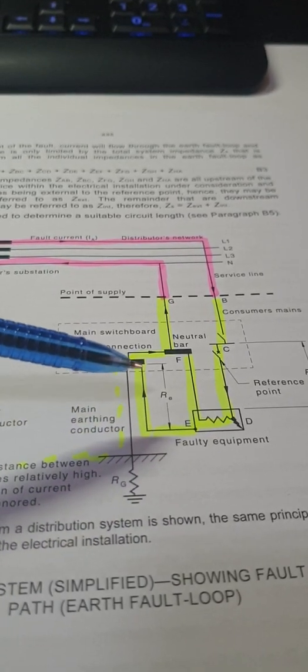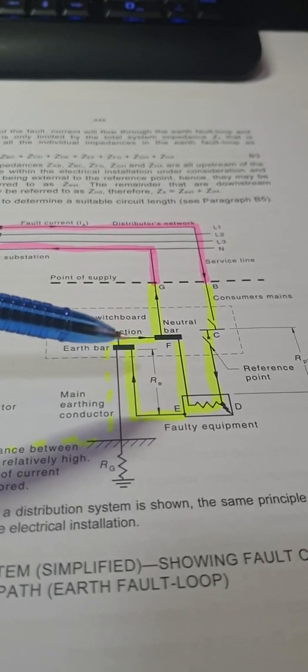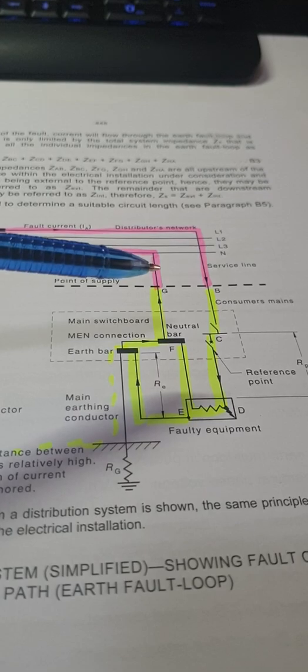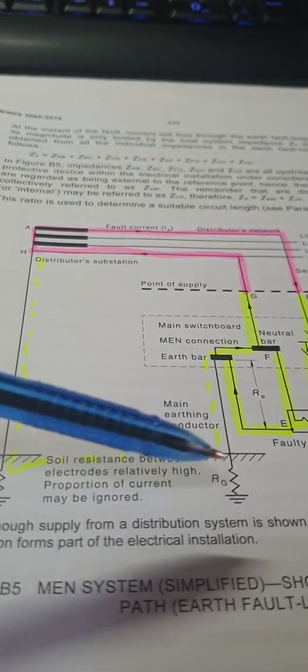So the fault loop impedance is between the supply active down through here to the earth, back here to the earth bar via the MEN link, which is this part here, and then back out again. It takes the shortest path. I'm going to do another video on why it goes back via the neutral and not back via the ground.